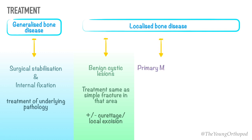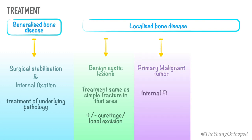In the case of a primary malignant tumor, the fracture may need splinting and internal fixation with load-bearing implants, and may also require excision and endoprosthetic replacement. The definitive treatment of the tumor is the main concern, and the prognosis is almost always very poor.